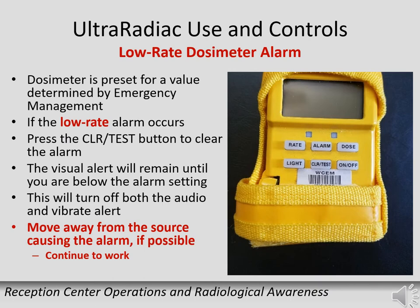The rate alarm has a low rate alarm setting. If the dosimeter reaches this value, the unit will alarm with vibration, visual, and audible alerts. To reset the audible and vibration alert, press the clear test button; the visual will remain lit until you are below the alarm setting. If the low rate alarm occurs, move away from the source if possible and continue to work.